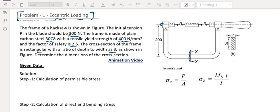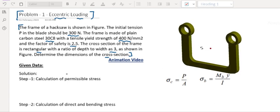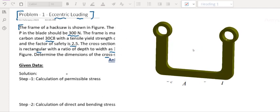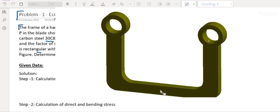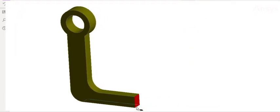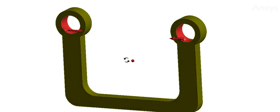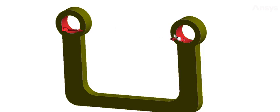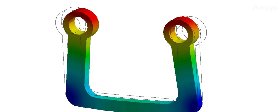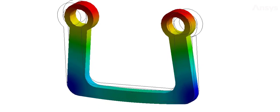We have to find out the dimensions of the cross section. The model shows the hacksaw bottom frame. The cross section is a rectangle, where width is T and depth is 3T.